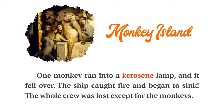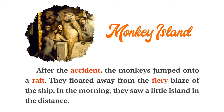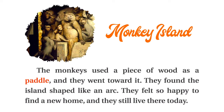One monkey ran into a kerosene lamp and it fell over. The ship caught fire and began to sink. The whole crew was lost except for the monkeys. After the accident, the monkeys jumped onto a raft. They floated away from the fiery blaze of the ship. In the morning, they saw a little island in the distance. The monkeys used a piece of wood as a paddle and they went toward it. They found the island shaped like an arc. They felt so happy to find a new home and they still live there today.